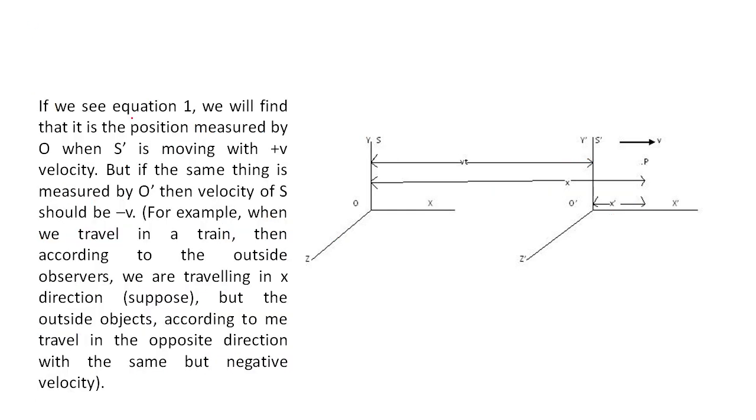If we see equation 1, we will find that it is the position measured by O when S dash is moving with positive velocity plus V velocity.